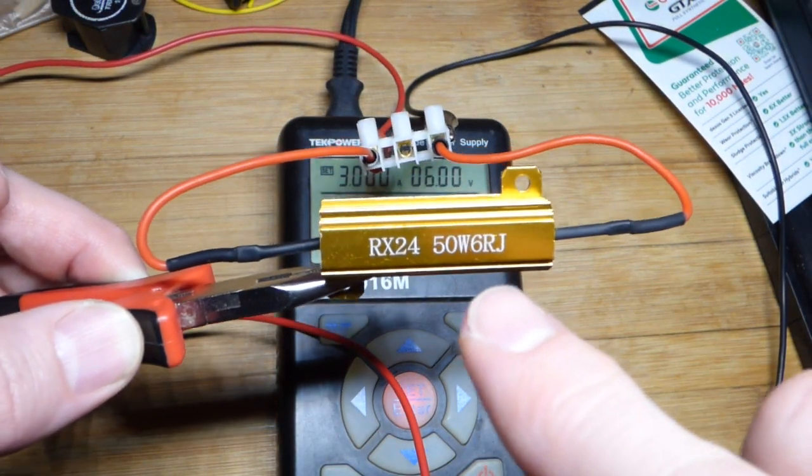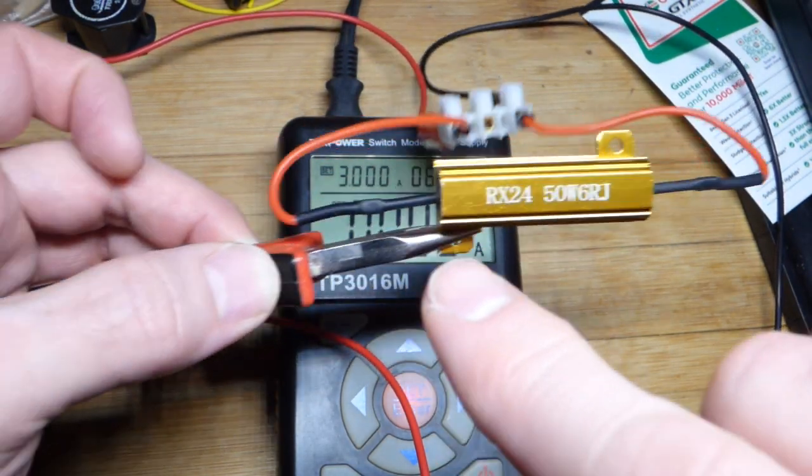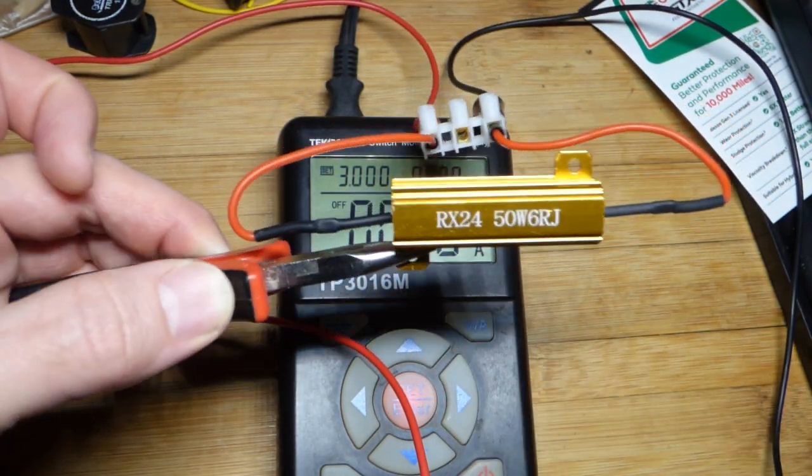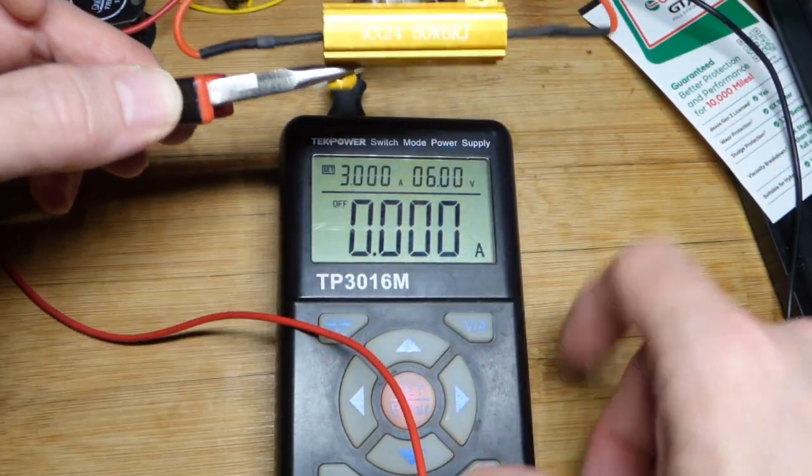So now I figured we'd take a quick look at my 6 ohm 50 watt resistor right there. It gets really hot so I'm going to hold it with a pair of pliers. But the power supply is off.